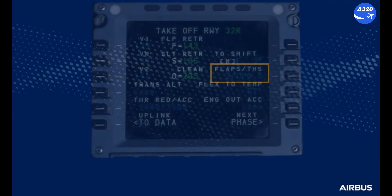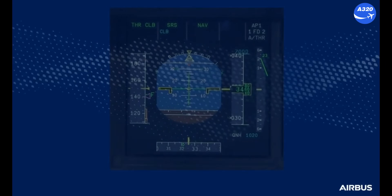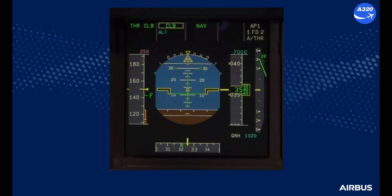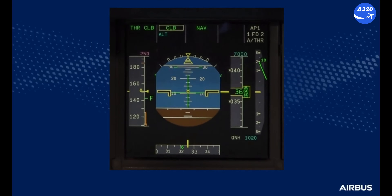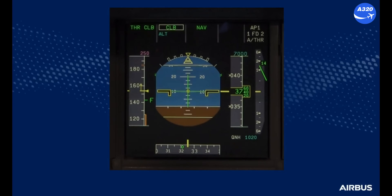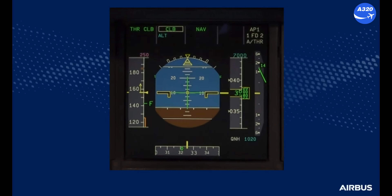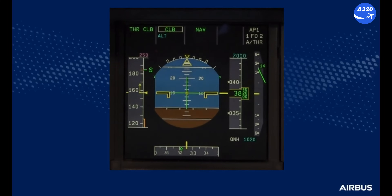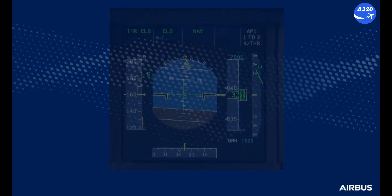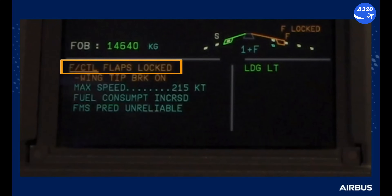Imagine a takeoff in config 2. When the aircraft goes above the acceleration altitude and the speed increases above F-speed, the pilot flying will request the pilot monitoring to select flaps 1. When the pilot monitoring selects flap 1, the crew receives a flaps locked ECAM alert.